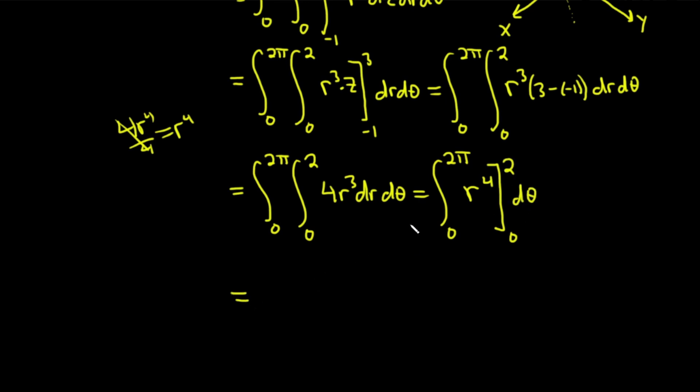This is equal to... First you plug in the 2, and then you subtract. We have 0 to 2 pi. Plug in the 2, you'll get 16. Subtract and plug in 0, you'll get 0. And then we have d theta. Finally, we have a single integral. So it takes a bit of work in these problems. And then 0 to 2 pi, 16 d theta.